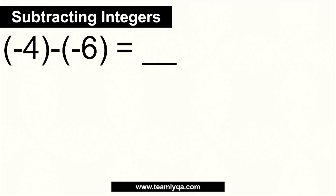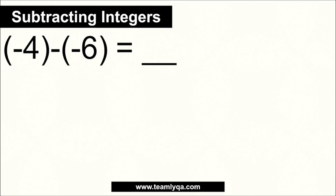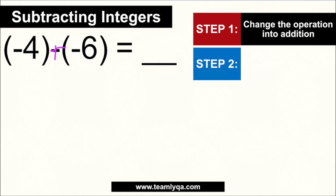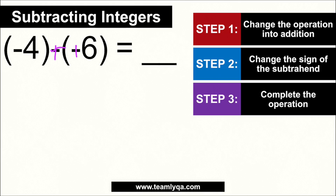Another combination: negative 4 minus negative 6. Step 1: change the operation into addition. Step 2: change the sign of the subtrahend — negative 6 becomes positive 6. Now we have negative 4 plus positive 6. Because the signs differ, subtract: 6 minus 4 is 2. Copy the sign of the bigger number, which is 6 — positive. So the answer is positive 2, or just 2.